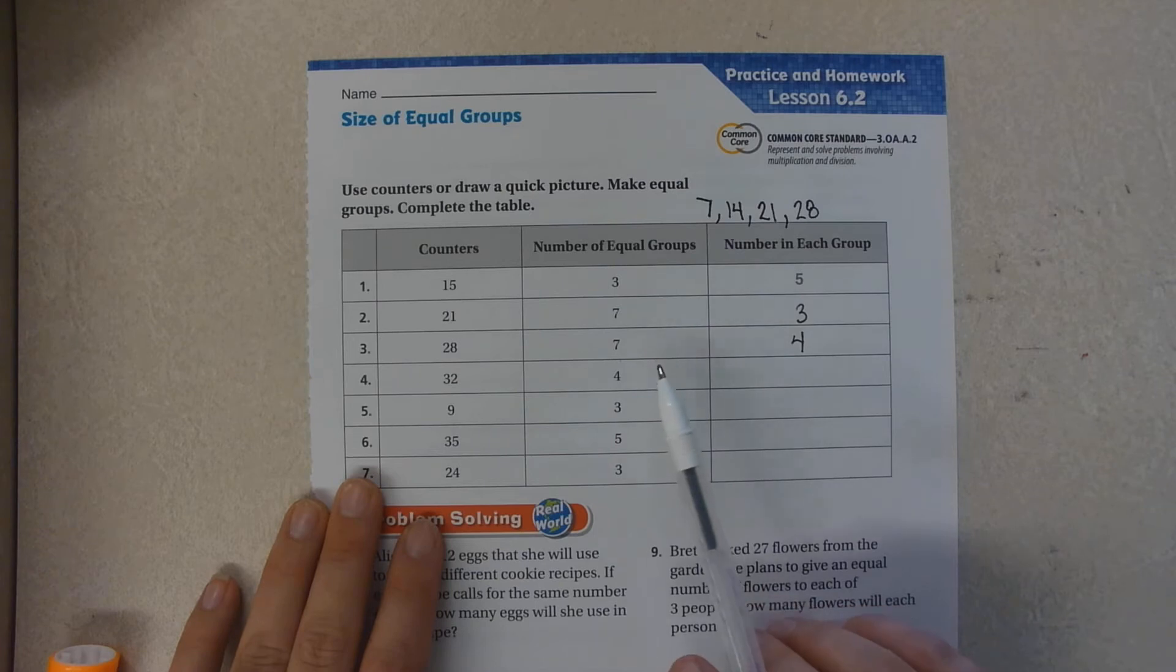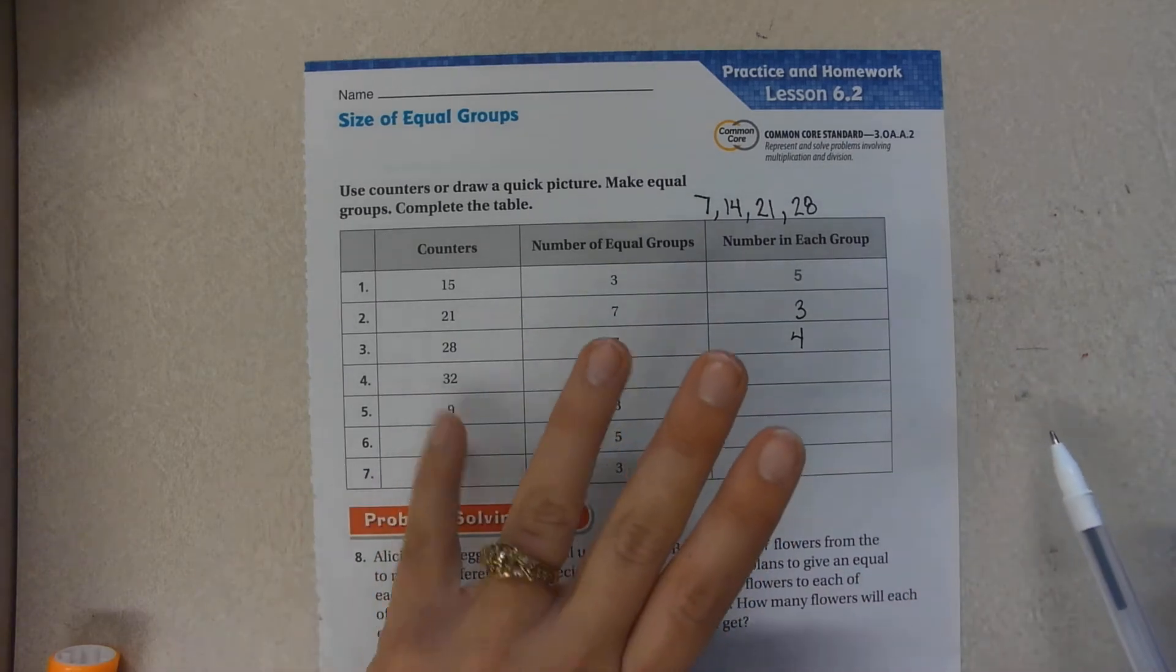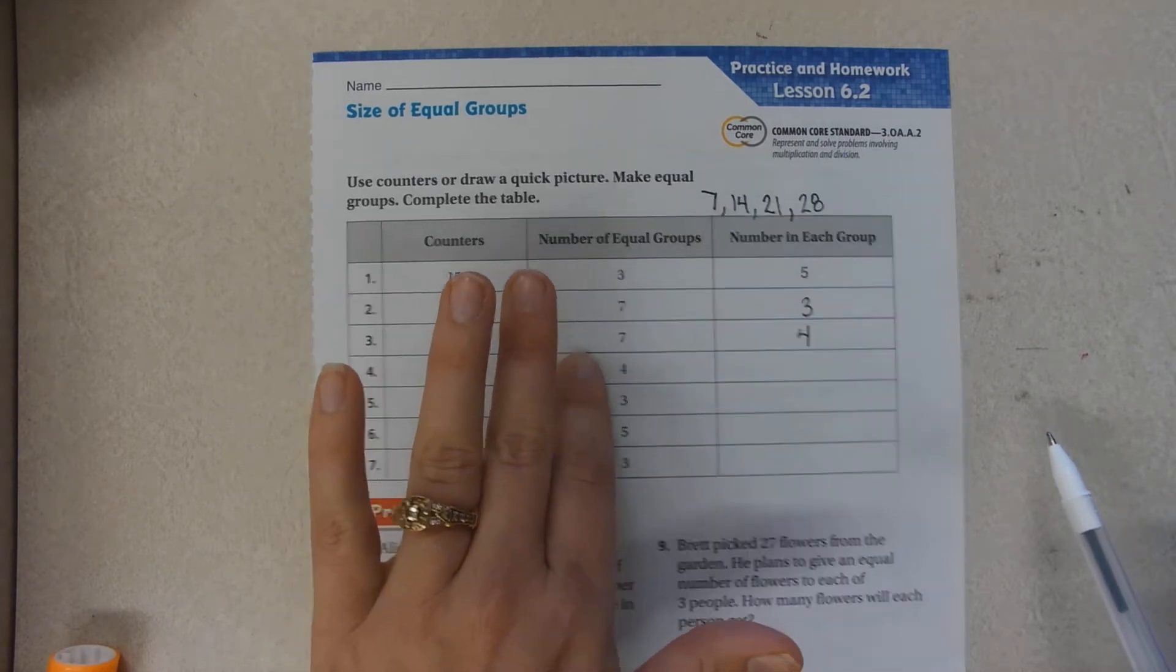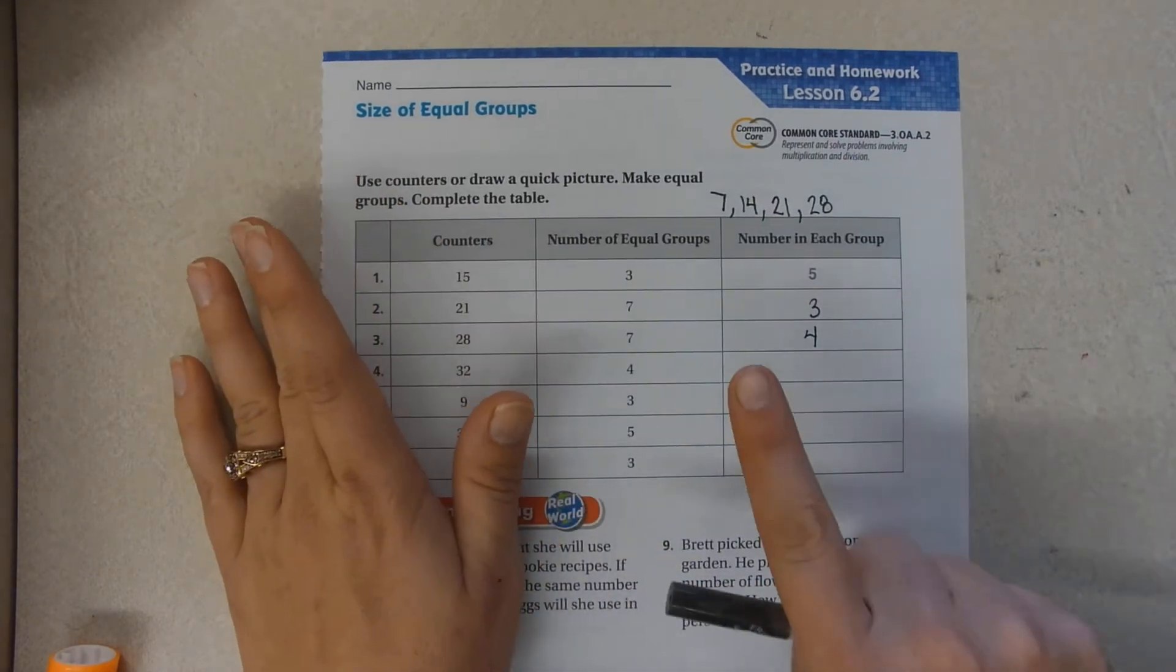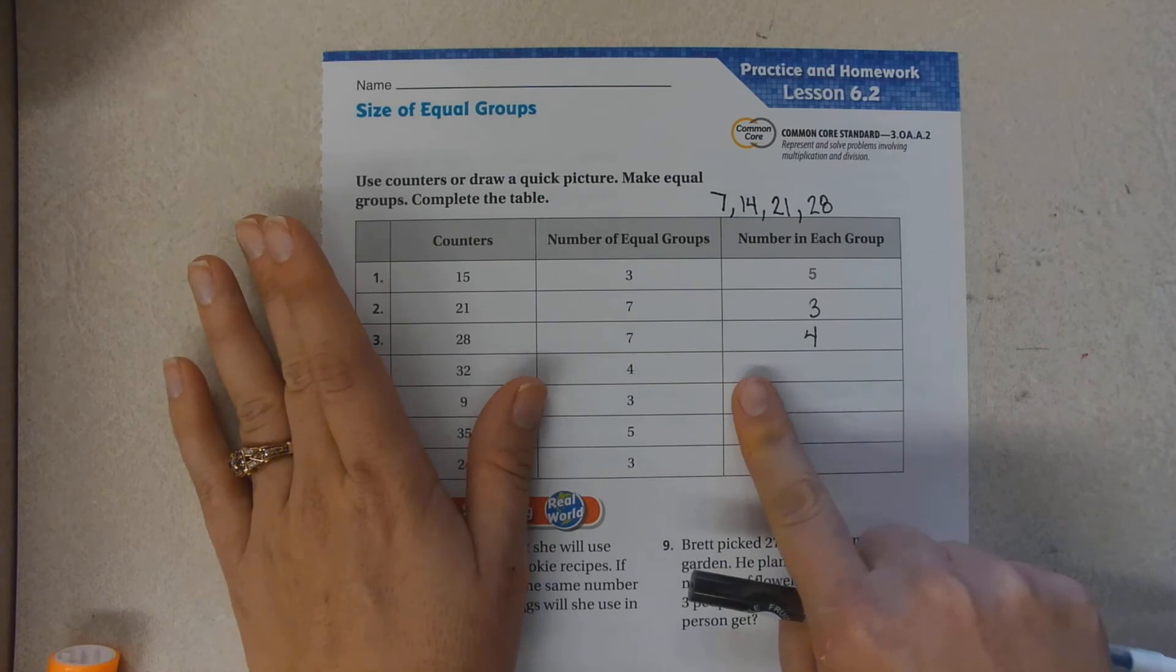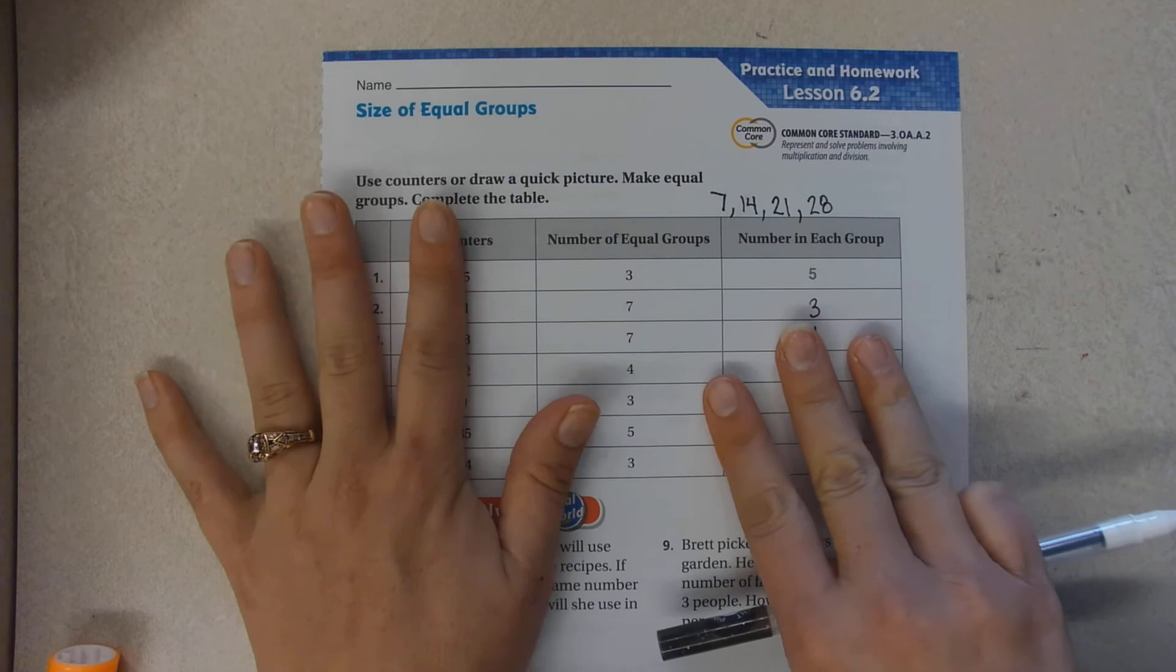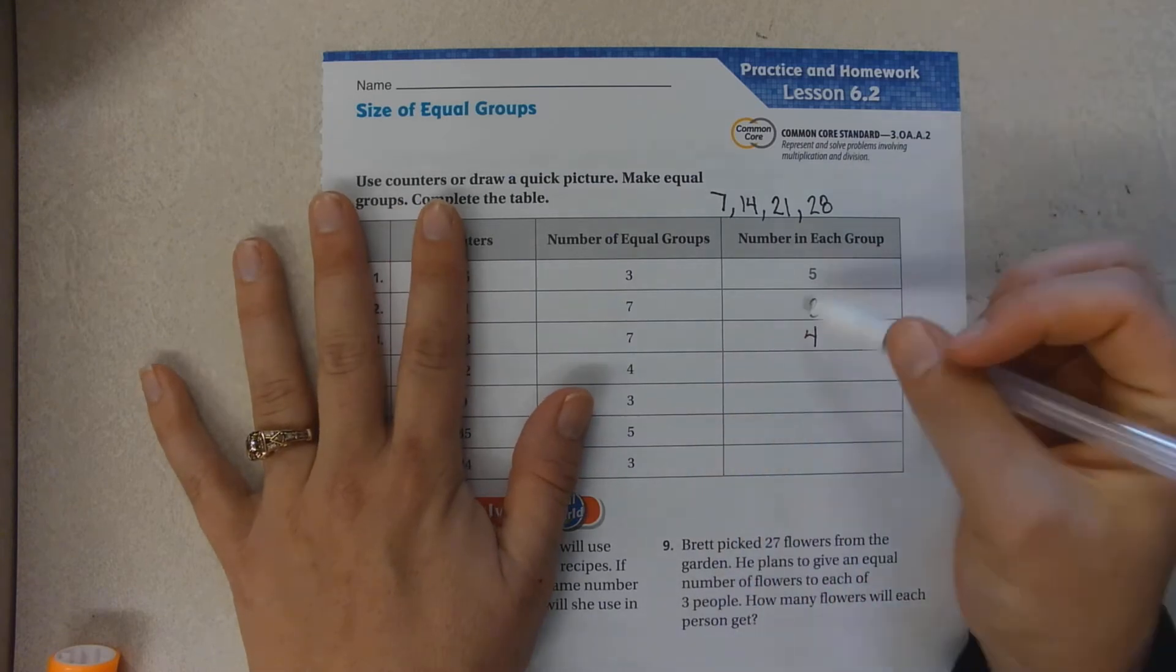32 divided by 4. How many times does 4 go into 32? 4, 8, 12, 16, 20, 24, 28, 32. Eight.